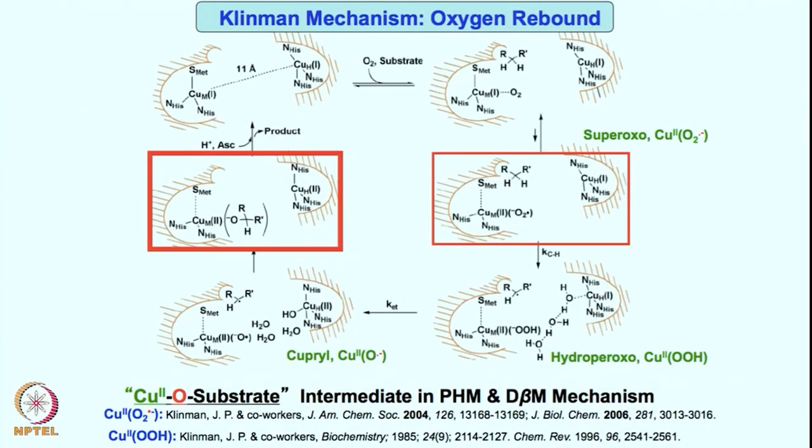Welcome back to today's class on Copper Oxygen Chemistry. In the last class we have seen how mononuclear copper oxygen chemistry can react with organic substrate to give beautiful chemistry. Let us try to see how this synthetic chemistry is related or relevant to enzyme chemistry — how inorganic laboratory and enzyme chemistry are merging with each other. As we were discussing in enzyme, there is the copper alkoxo intermediate, which was forming from the ligand itself.